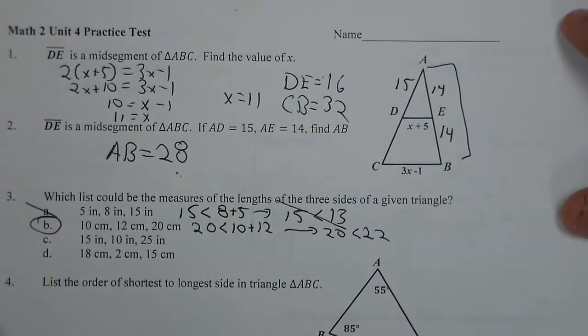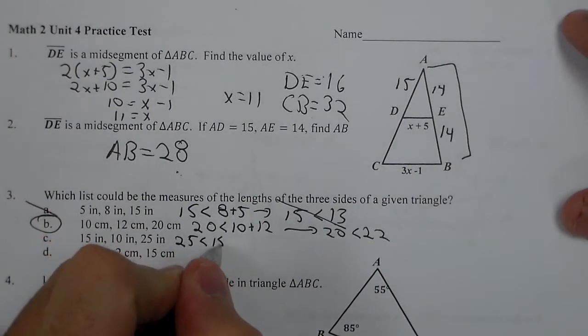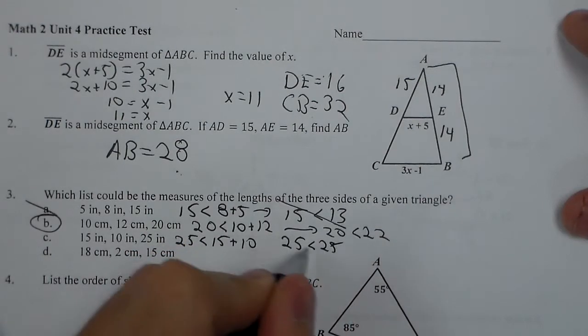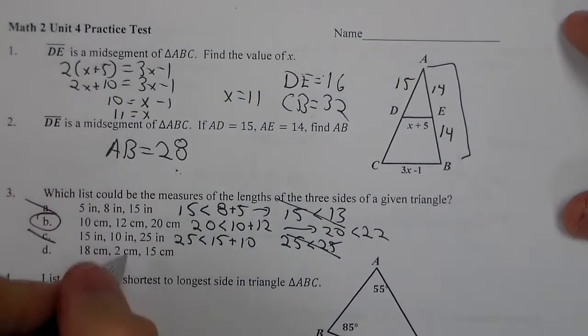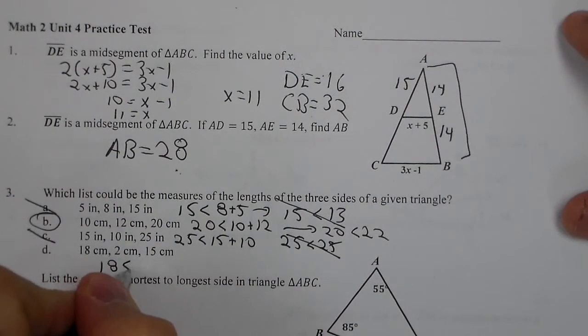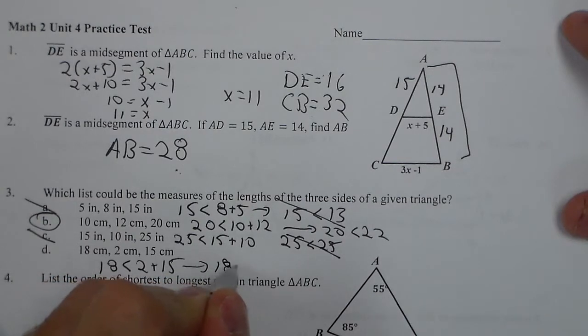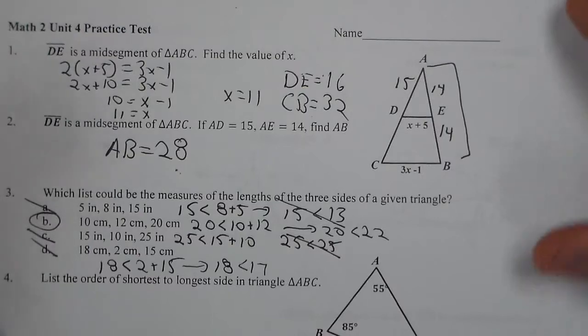That can make a triangle. If we keep going, we get 25 is less than 15 plus 10, which is 25 is less than 25. That's not true. They're actually equal to each other. And then the last one, 18 is less than 2 plus 15 is 18 is less than 17. That is false. So B is our best answer.